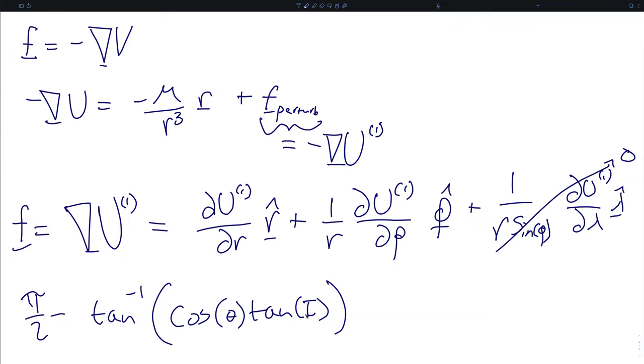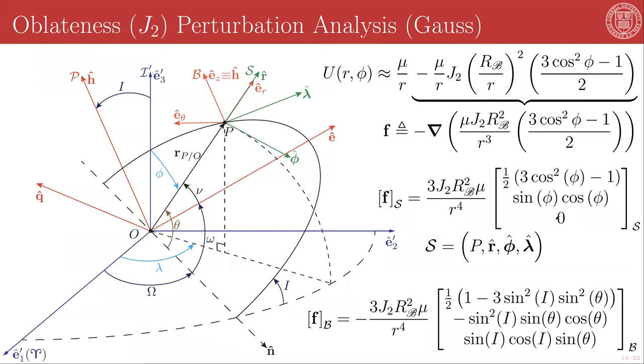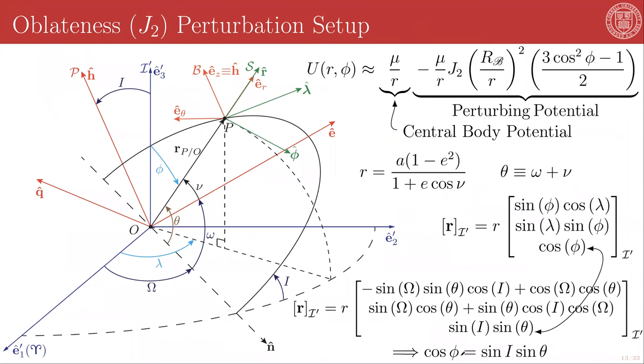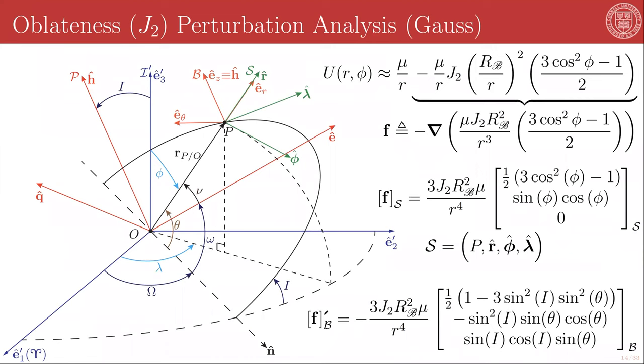So we form the direction cosine matrix that is the rotation by this angle about that first unit direction of both frames, we apply it to this matrix, we make the substitution that we previously found that cosine phi is equal to sine I sine theta, and we end up with this form of the perturbing force in components of the B frame.